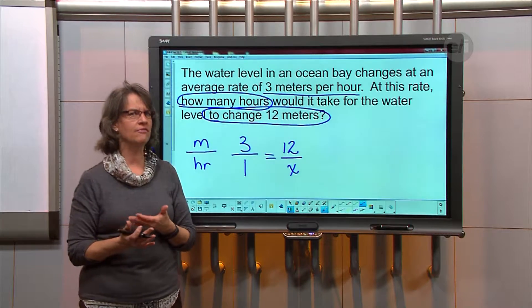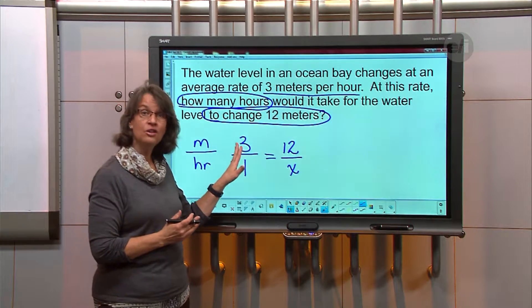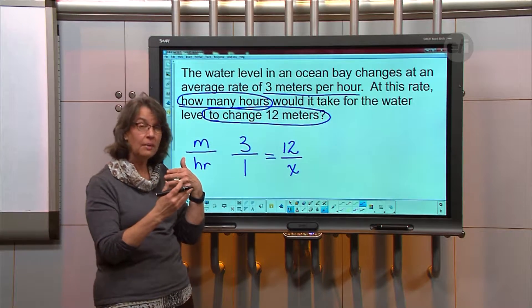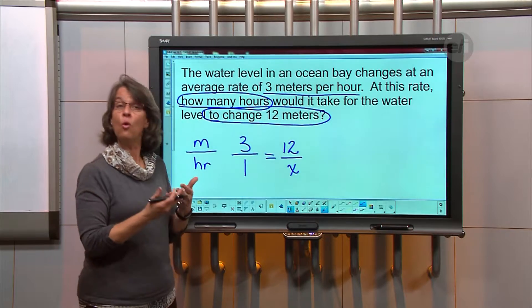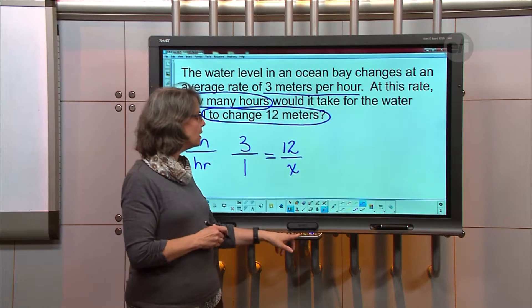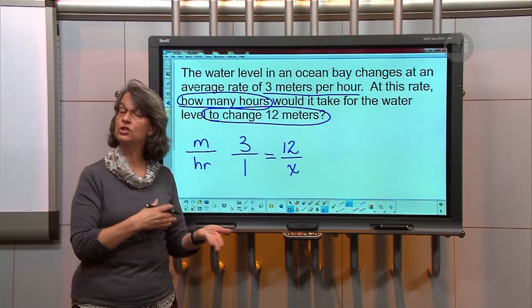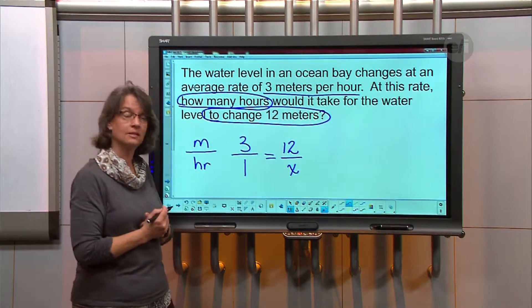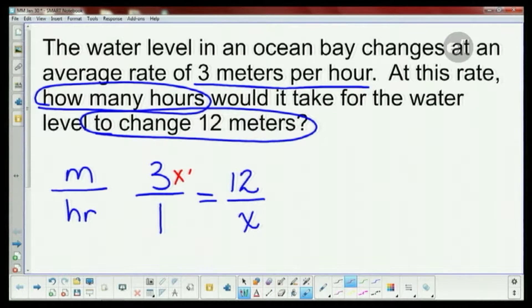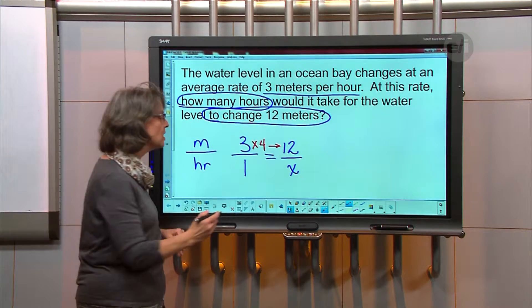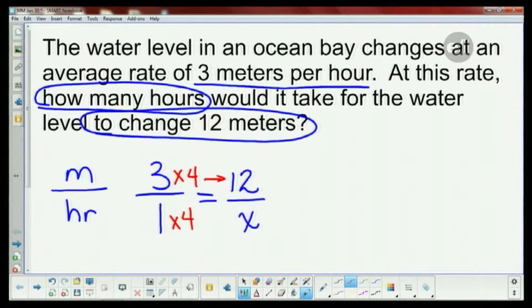All right, now there's two different ways you could solve this. You could, because this is an easier one, just look at it and say, oh what do I multiply 3 by to get 12, and then do the same to the bottom. Or you can cross multiply. Well this one I'm going to do the easier method. So I know to get to 12 I'm going to times this by 4, and that gives me the 12. But remember when we're talking about fractions and ratios, what you do to the top you also have to do to the bottom. So I now have to do 1 times 4 to get x. So I know that x is equal to 1 times 4, which is the same as 4.